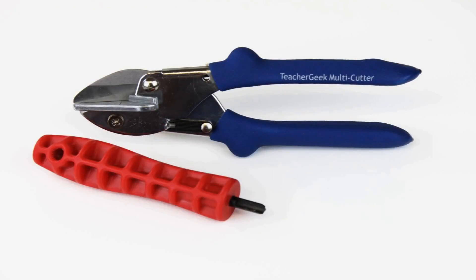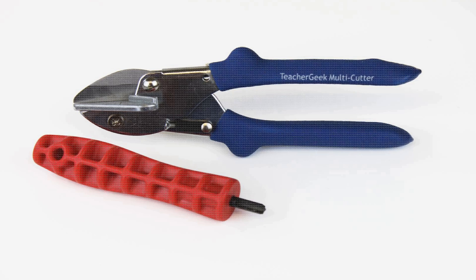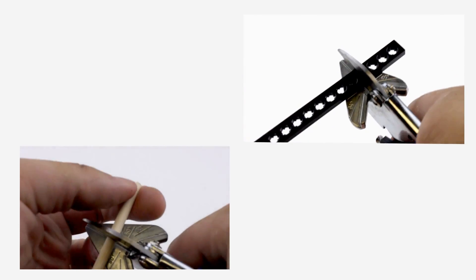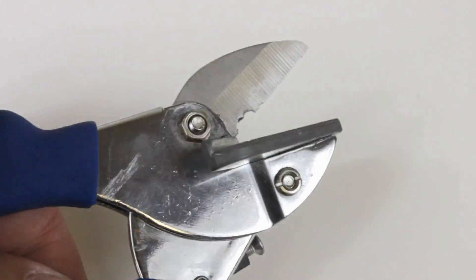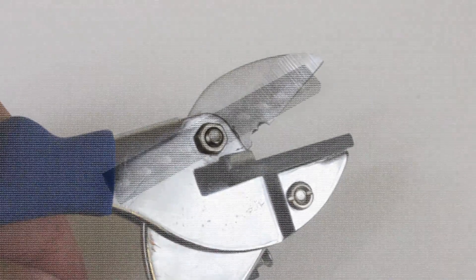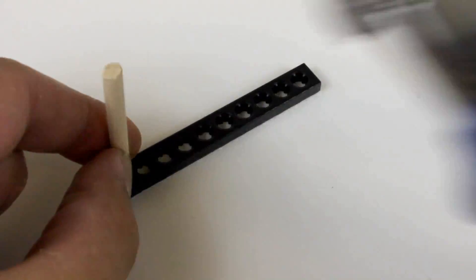The TeacherGeek construction system allows you to build almost any mechanism you can imagine using two simple tools. The dowels and connector strips can be easily cut to size using our TeacherGeek multicutter, but don't use it to cut metal because you'll ruin the blade. Most of our TeacherGeek components come with holes that dowels just press into.